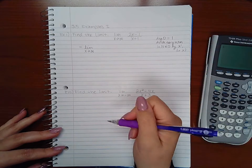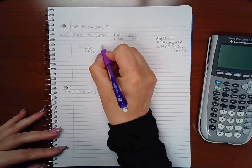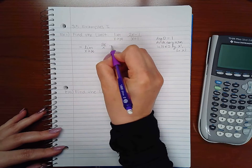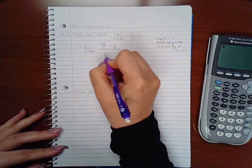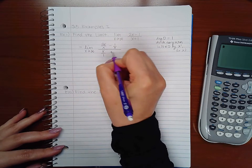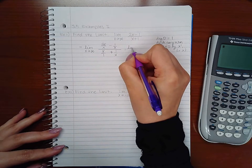So I'm going to say (2x over x) minus (1 over x) all over (x over x) plus (1 over x). And if I simplify that...